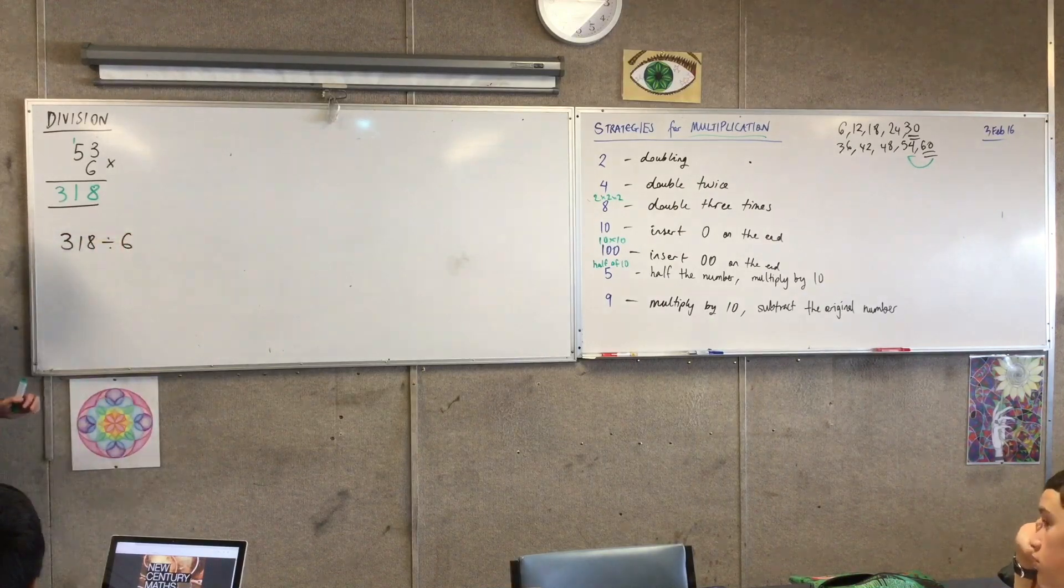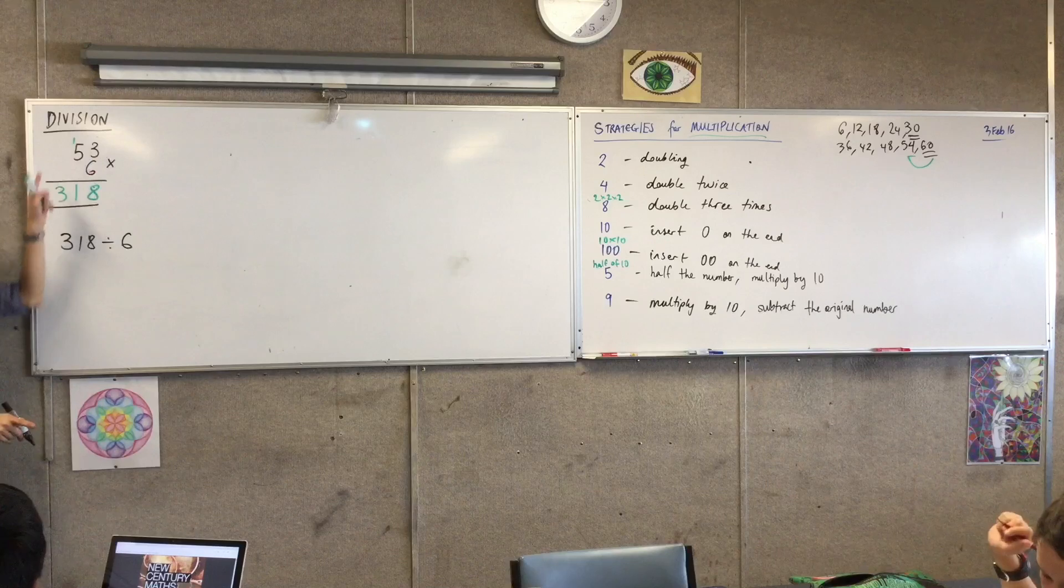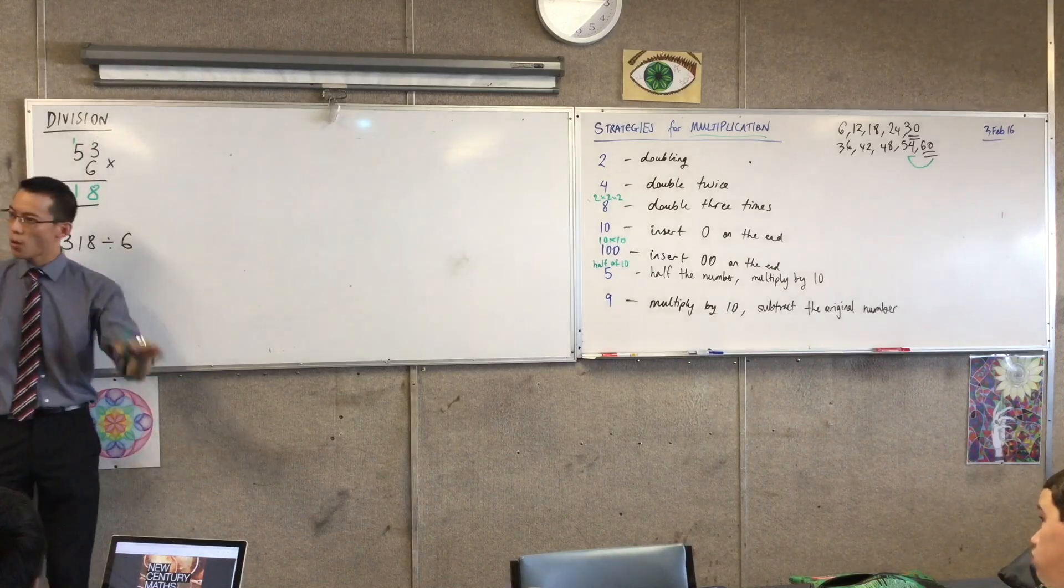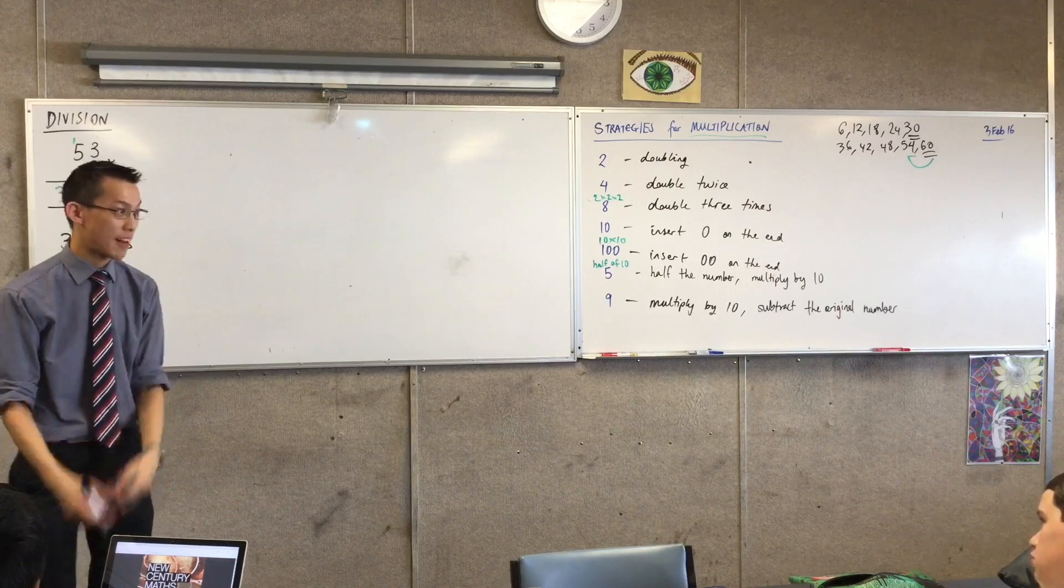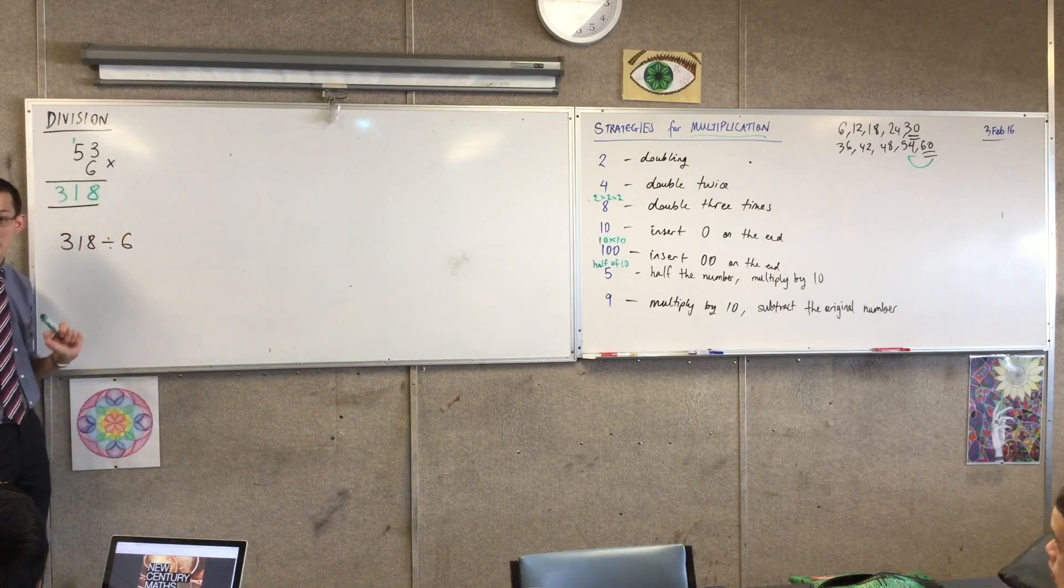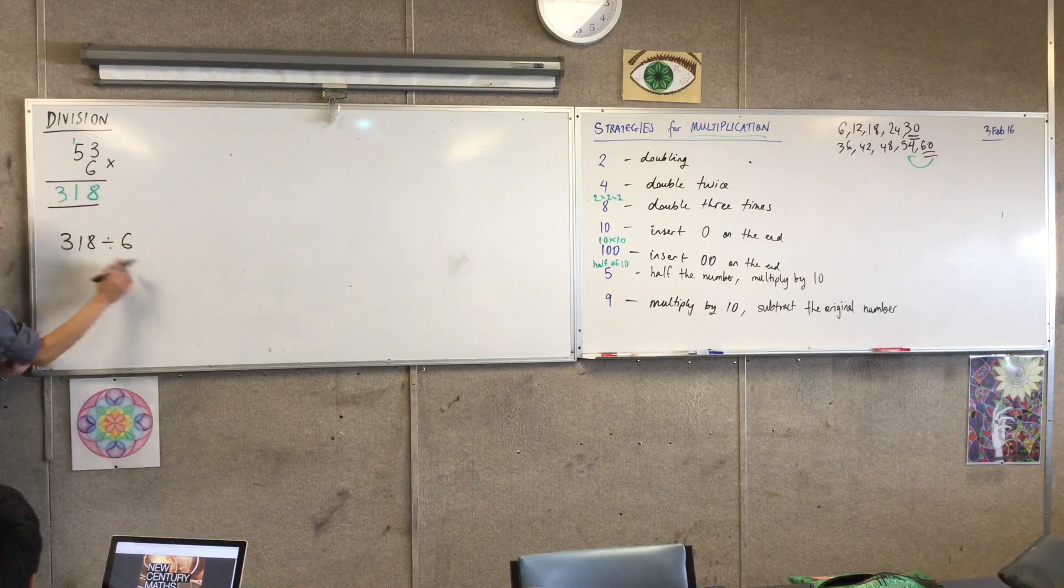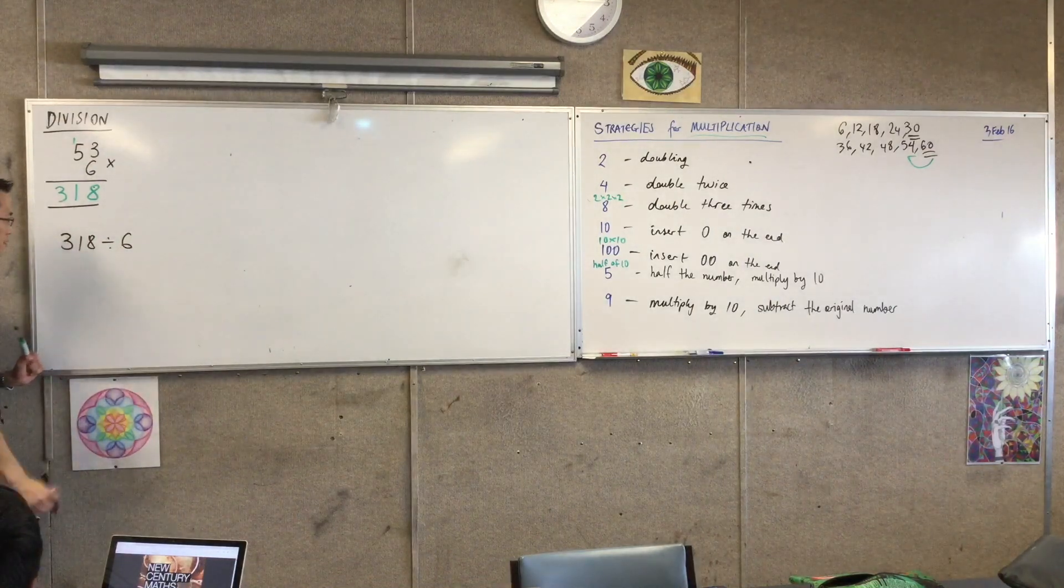318 divided by 6. Now, we know what the answer is. It's right there. But I want to show all of you. Do you remember I talked about in the bookmark how it's important to set things out properly? I'm going to show you how I would set this out. So having written all of this down, here's the way I'm going to approach this.